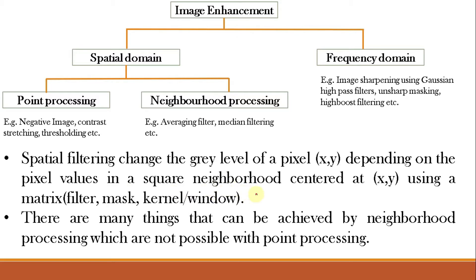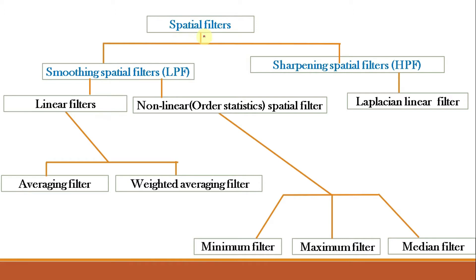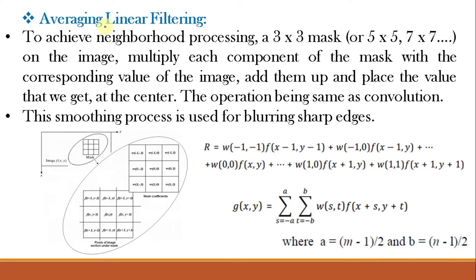There are many things achievable by neighborhood processing that are not possible with point processing, hence we use image enhancement using neighborhood processing. Spatial filters can be broadly classified into two categories: low pass filters and high pass filters. Low pass filters are smoothing filters; high pass filters are sharpening spatial filters. Smoothing spatial filters can be further classified into linear filters and nonlinear or order statistics spatial filters. In this lecture we will learn different linear filters — specifically averaging filters and weighted averaging filters.